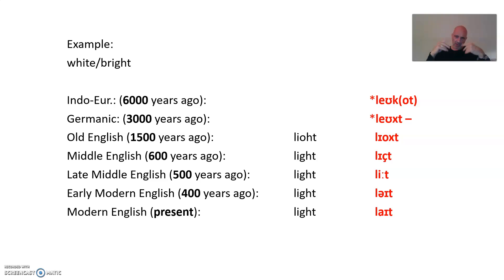And this developed over time. This is Indo-European and developed over time into Germanic. Some 3,000 years later, we have something like leuht. This word became leuht, from leukot to leuht.